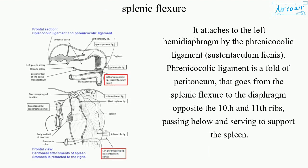It attaches to the left hemidiaphragm by the phrenicocolic ligament, also known as the sustentaculum lienis. The phrenicocolic ligament is a fold of peritoneum that goes from the splenic flexure to the diaphragm, opposite the 10th and 11th ribs, passing below and serving to support the spleen.